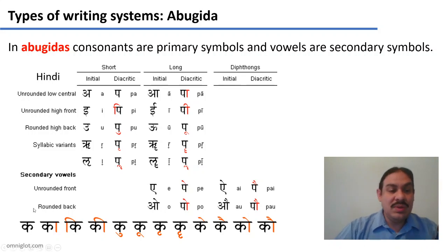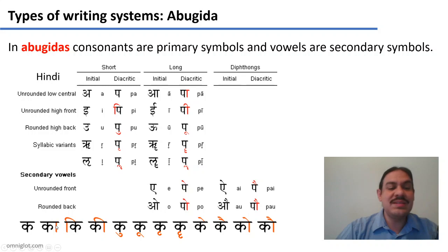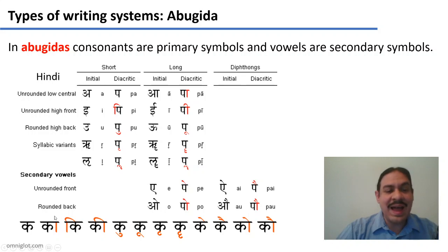For example, this one here is the consonant K accompanied by an implicit A, so this would be read as 'Ka.' This dash line here indicates a long A, so this is 'Kā.' This is the K accompanied by a short E, so this is 'Ki.'